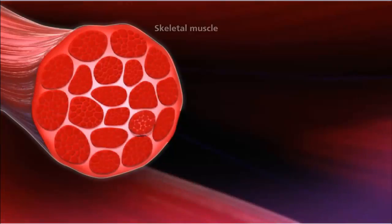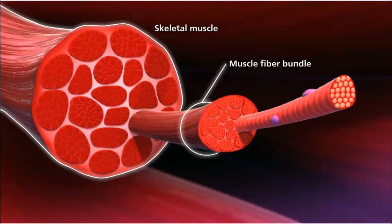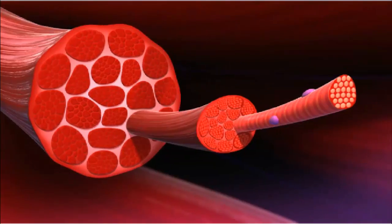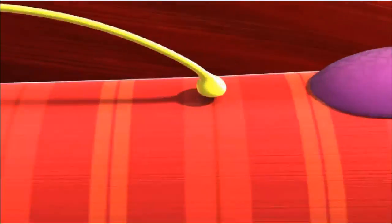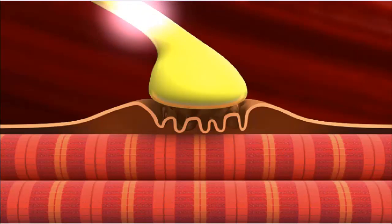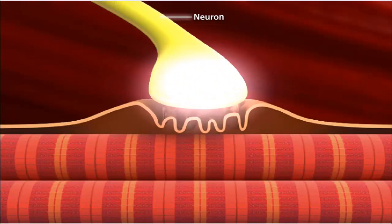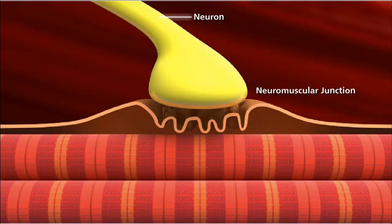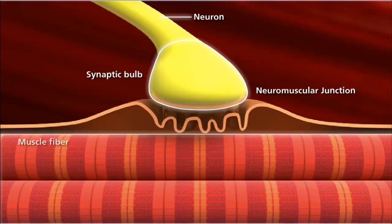Skeletal muscles are composed of bundles of muscle fibers. Muscle fibers are long cylindrical cells containing several nuclei. Muscles will contract or relax when they receive signals from the nervous system. A neuromuscular junction is the site of the signal exchange — this is where the synaptic bulb of an axon terminal and muscle fiber connect.